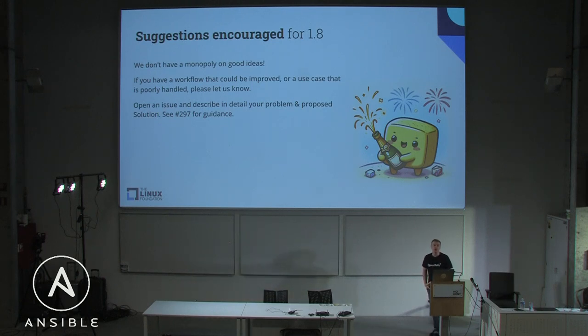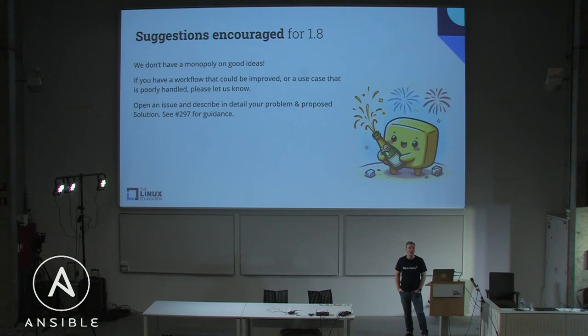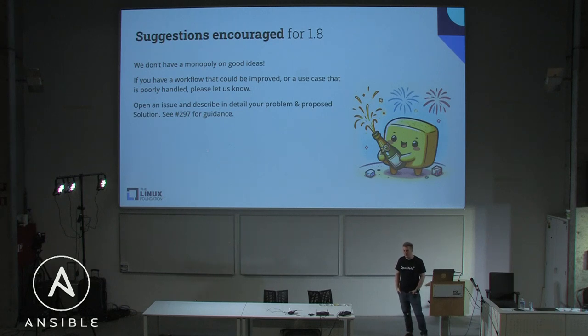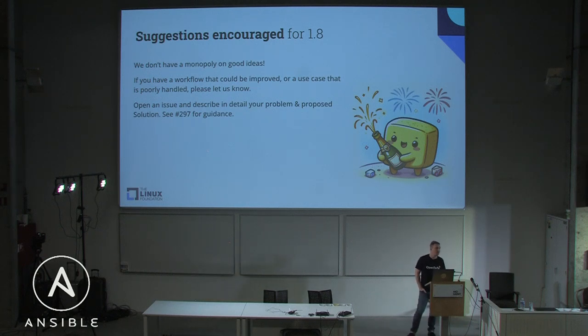We haven't yet decided what the flagship feature will be for 1.8. We have some good candidates, but we don't have a monopoly on ideas — we're expecting folks in the community to suggest things. If you've got a workflow that's kind of broken or a use case that's poorly handled, just create an issue, describe the problem, maybe go into a little bit of a proposed solution. Then we'll look at all the candidates and pick one to be the flagship feature. In the release model, we release as soon as that flagship feature is done.